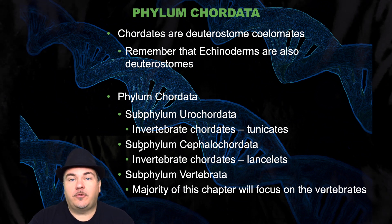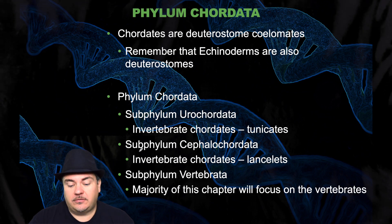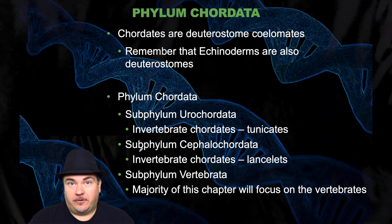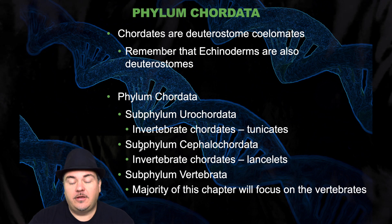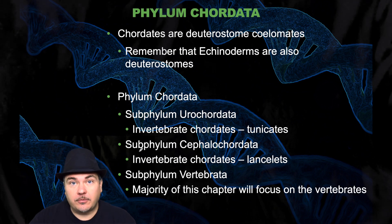Within the phylum Chordata we have the subphylum Urochordata, which are invertebrate chordates — that's the tunicates. We also have the subphylum Cephalochordata, which are also invertebrate chordates, and those are the lancelets. We briefly discussed these two in the previous chapter's lecture. In this chapter's lecture we're going to focus on the subphylum Vertebrata, which is the vertebrates.